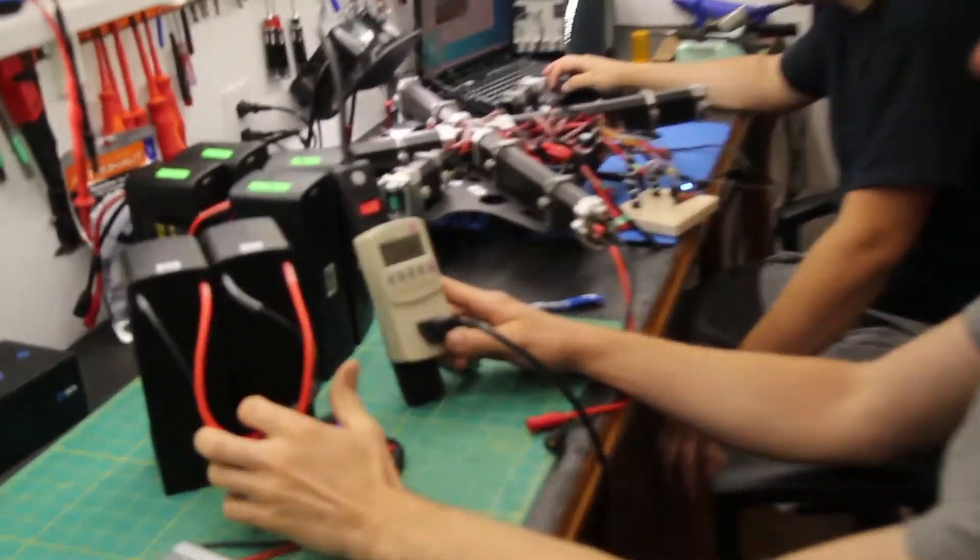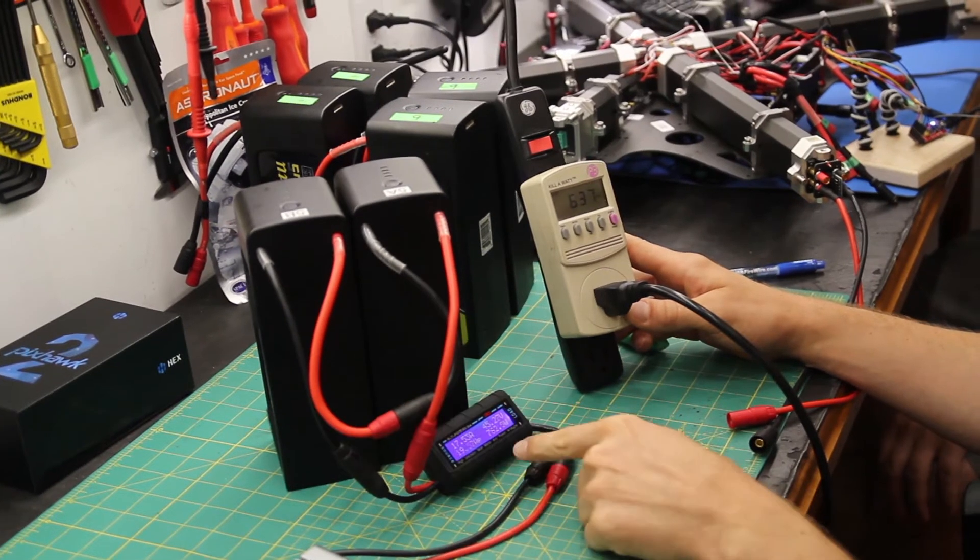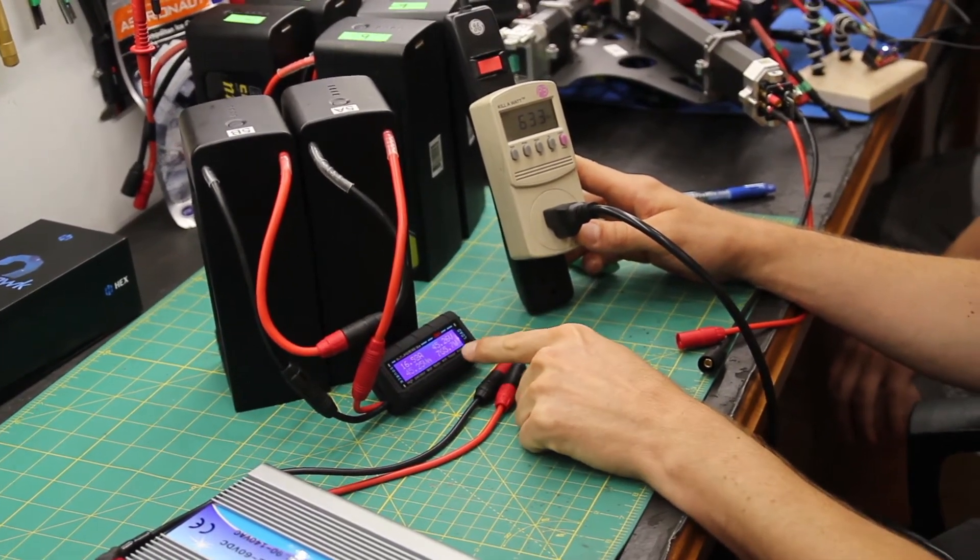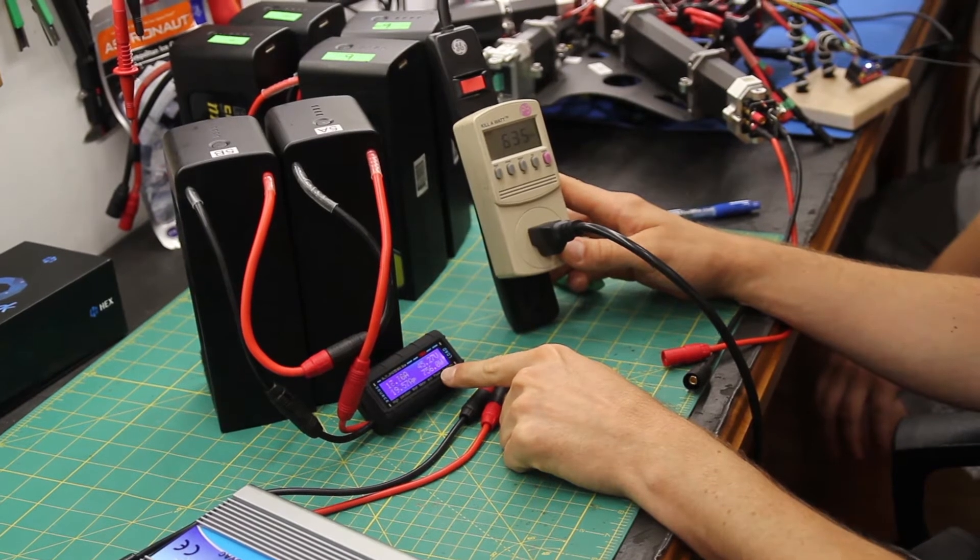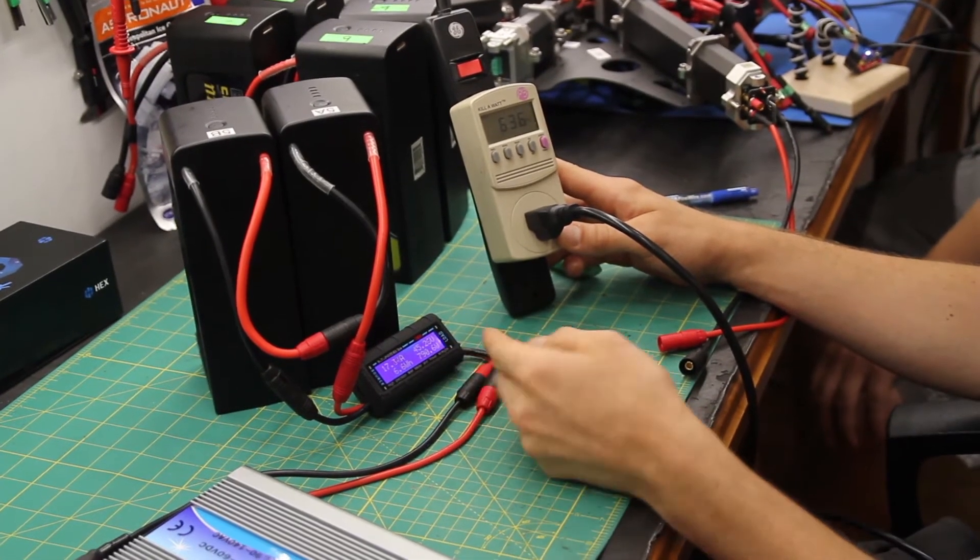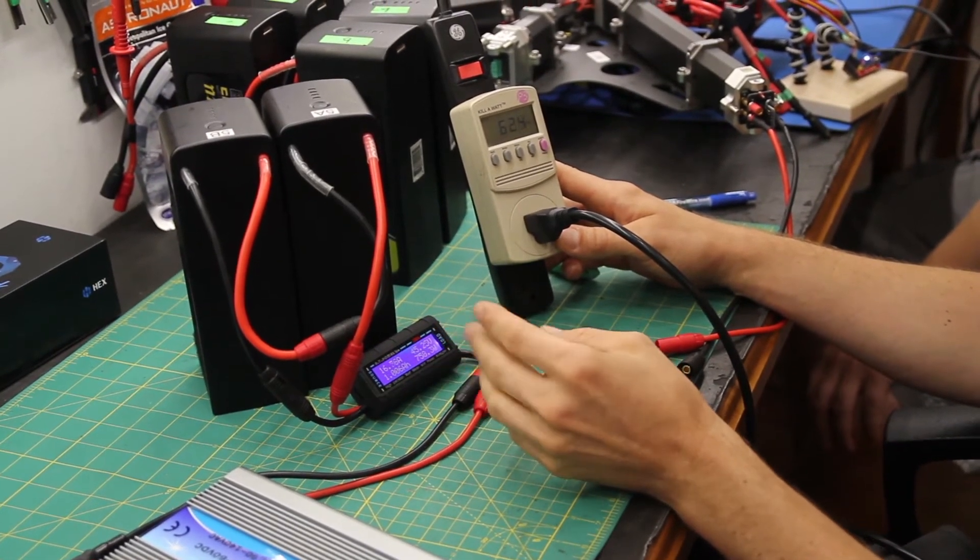So right now it's pulling power from these batteries. We're pulling 17.5 amps, 750 watts, 790. So it's between 750 and 800.